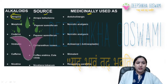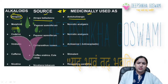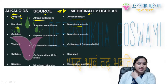Atropine: source is Atropa belladonna, medicinally used as an anticholinergic. Morphine: source is Papaver somniferum, used as a narcotic analgesic. There are many questions from previous years on morphine.